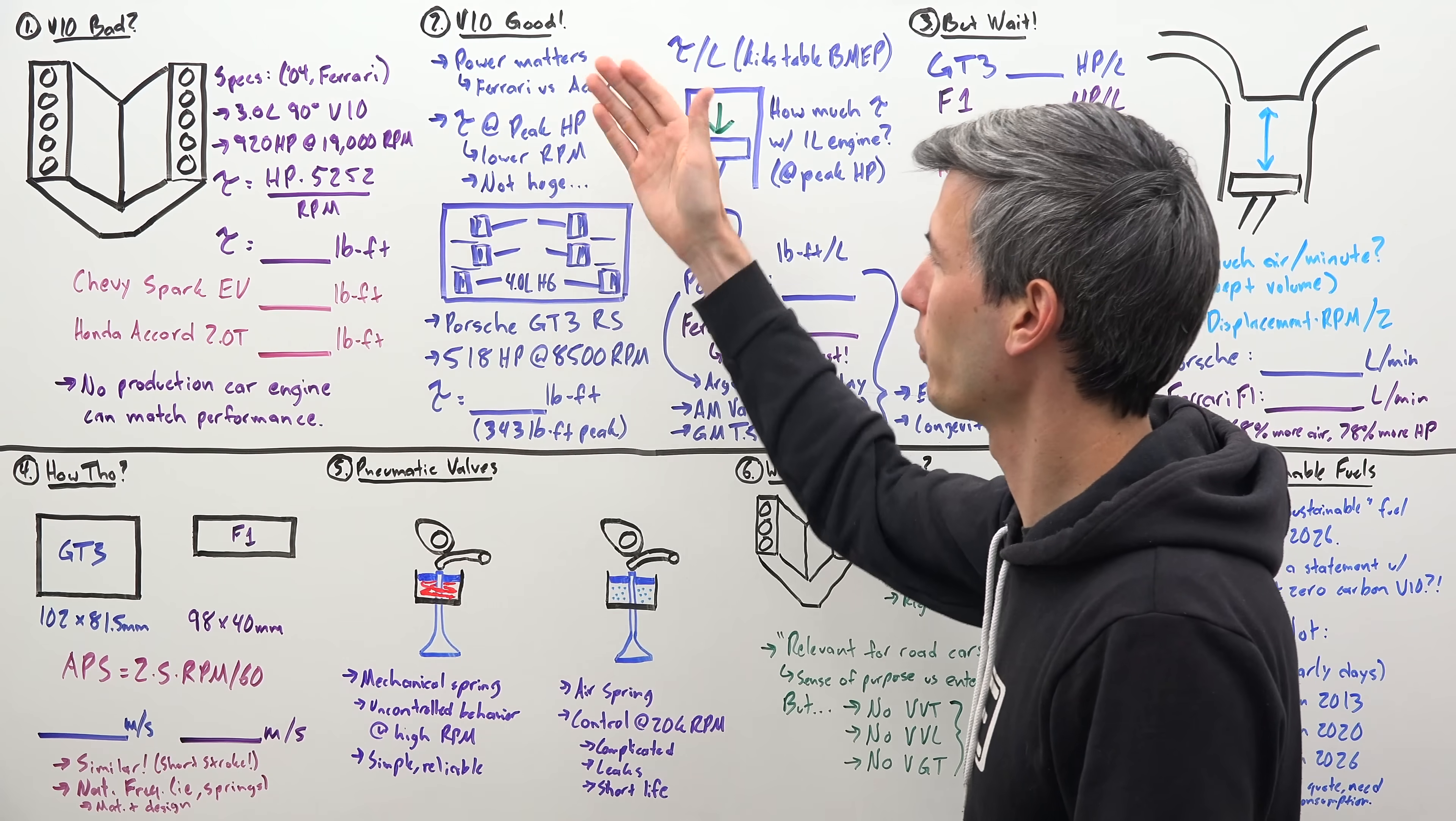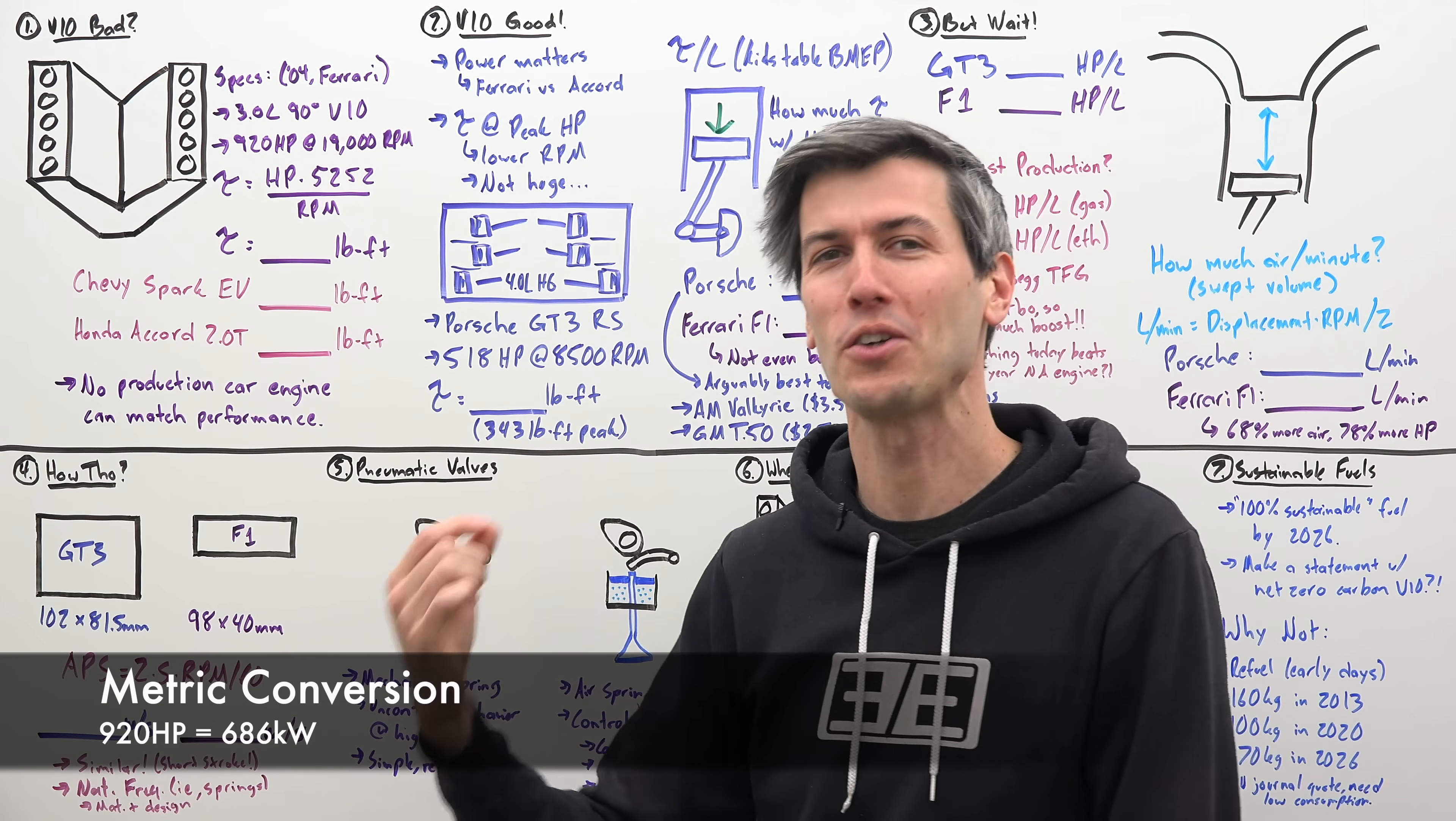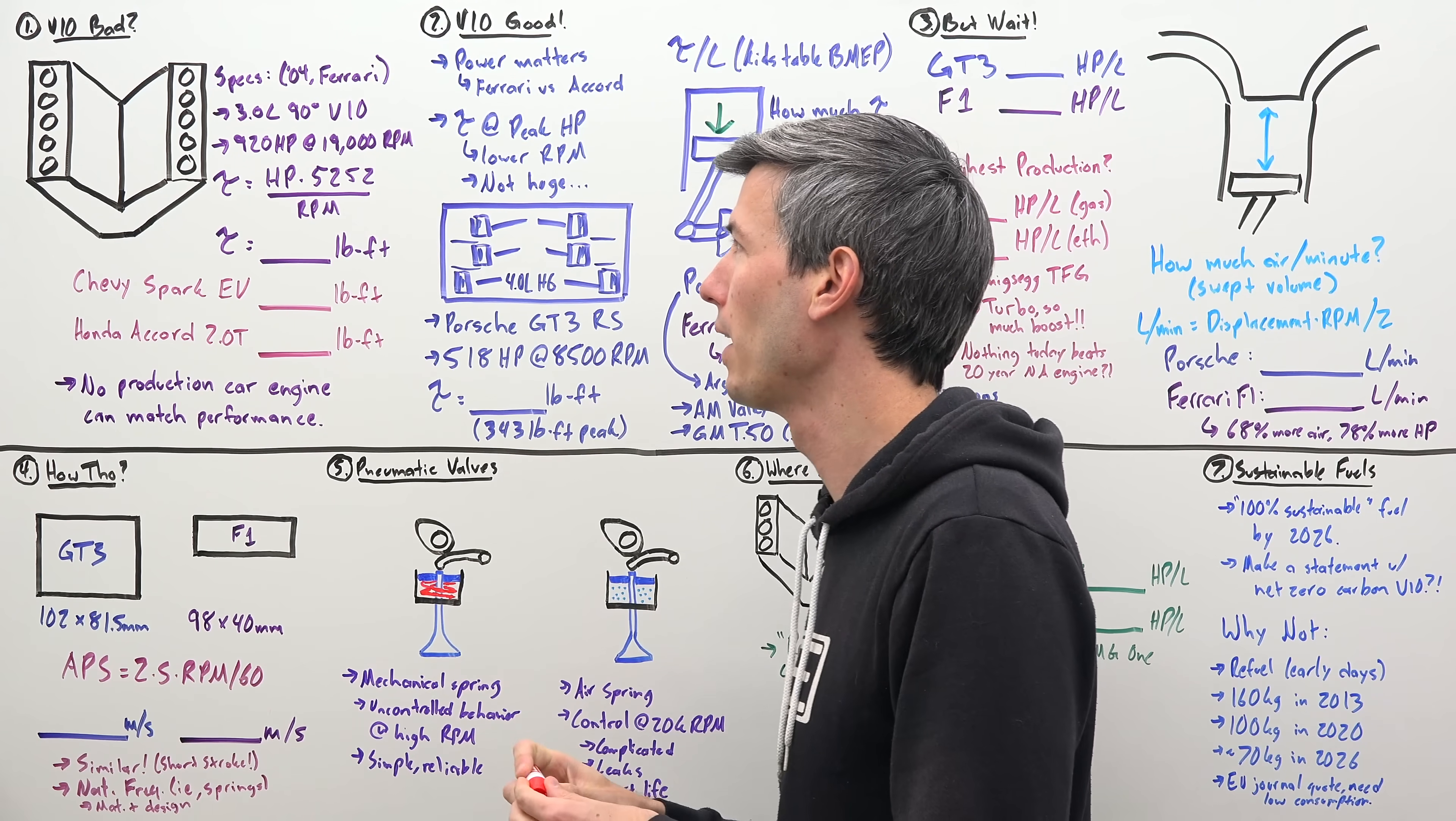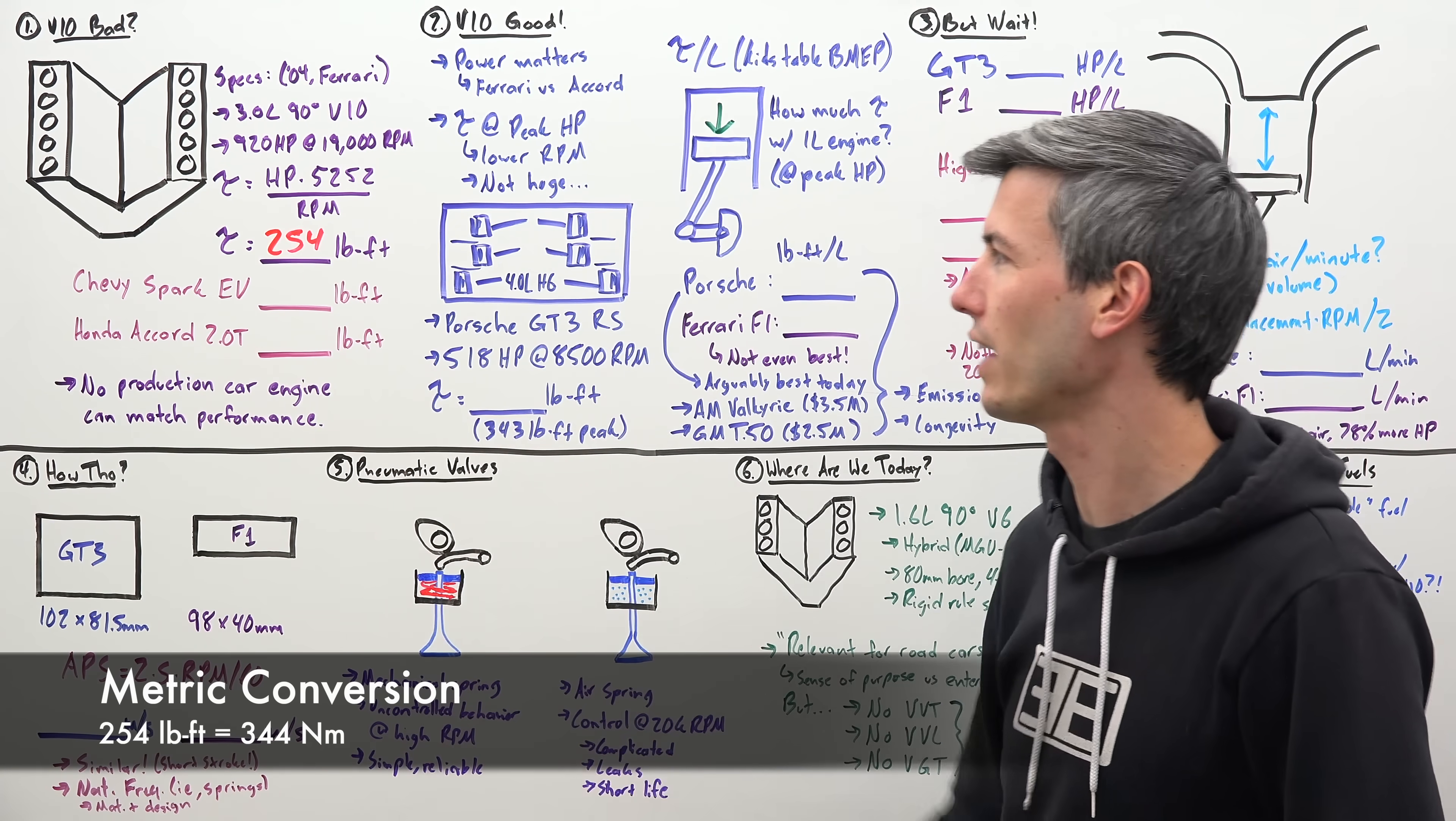So back in 2004 the Ferrari engine was a 3 liter naturally aspirated V10 engine making as much as 920 horsepower at 19,000 RPM. But how much torque was it making? Well it's a simple equation to find out: horsepower times 5252 divided by RPM, and we can find out that it is making just 254 pound-feet of torque, which we don't have any context for, so let's provide a little context.